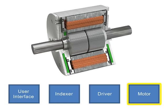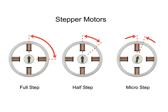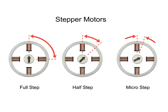The stepper motor is a brushless electric motor that converts pulses into mechanical shaft rotation. Each pulse moves the shaft through a fixed angle defined by the multiple toothed electromagnets arranged around a gear-shaped rotor. Stepper motors have three step modes of operation: full, half, and micro-stepping. The type of step mode output is dependent on the design of the driver, which also controls both the step angle and speed of the motor by switching the field coils in a set sequence.